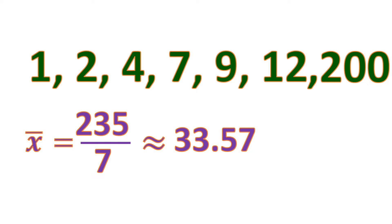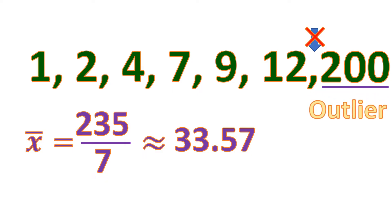Now where is 33.57? It's located up here, and that is actually not in the center. So it is giving you a false center or middle. Where it is supposed to be a measure of central tendency, it's not telling you the right center of the data. This is because of this number — it pulls the average or the mean away from the rest of the usual numbers because it's very far from them. It's 200, and the numbers are just from 1 to 12. This number is what you call an outlier — a number that affects the result of the mean. In this case, getting the center using the mean is not appropriate to use.